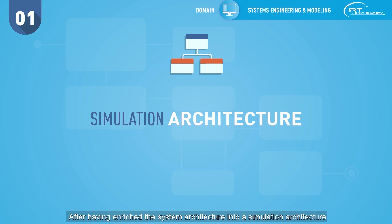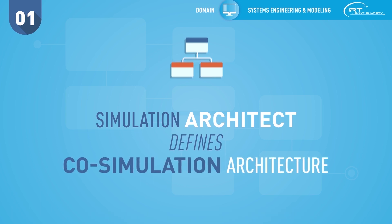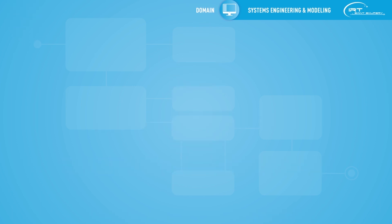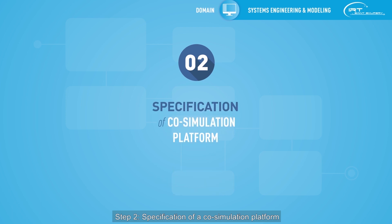After having enriched the system architecture into a simulation architecture, the simulation architect can now split it for co-simulation purpose. Step 2: specification of a co-simulation platform.